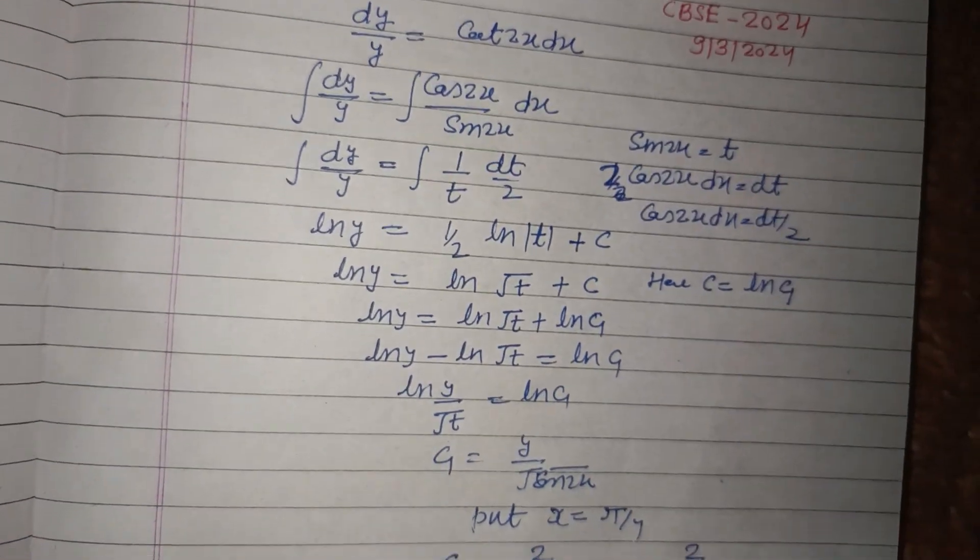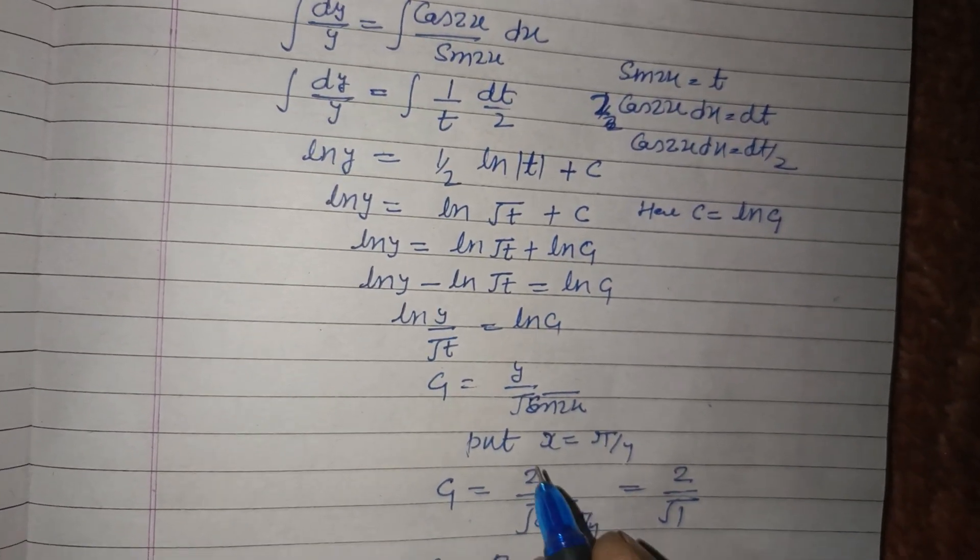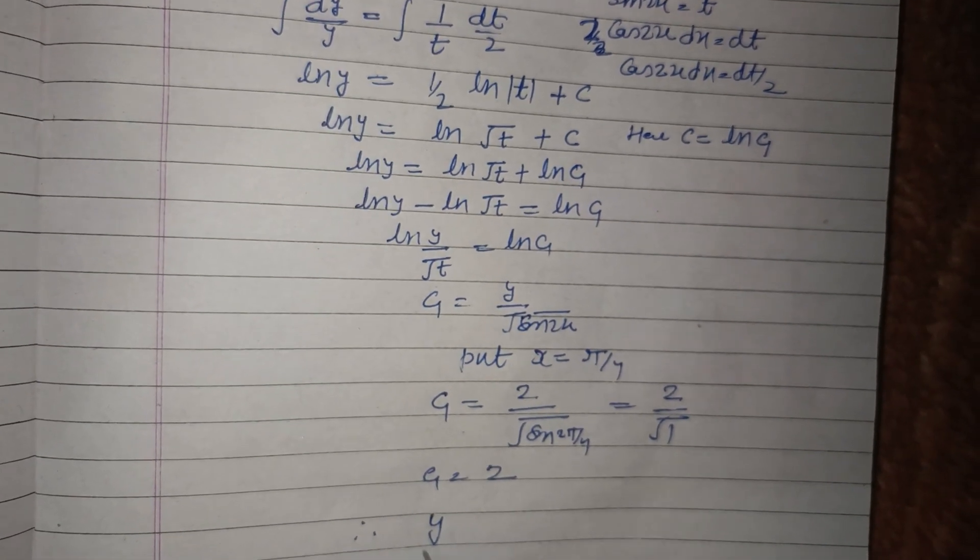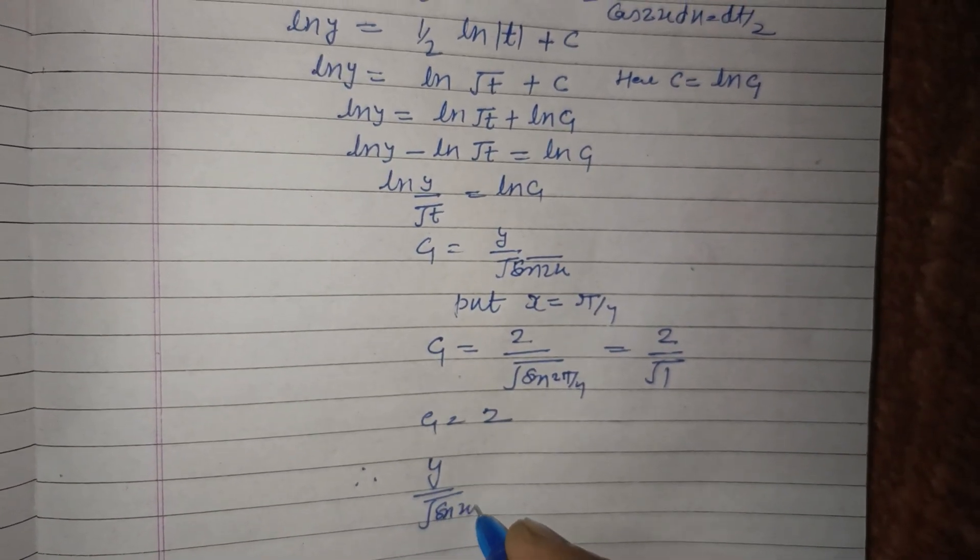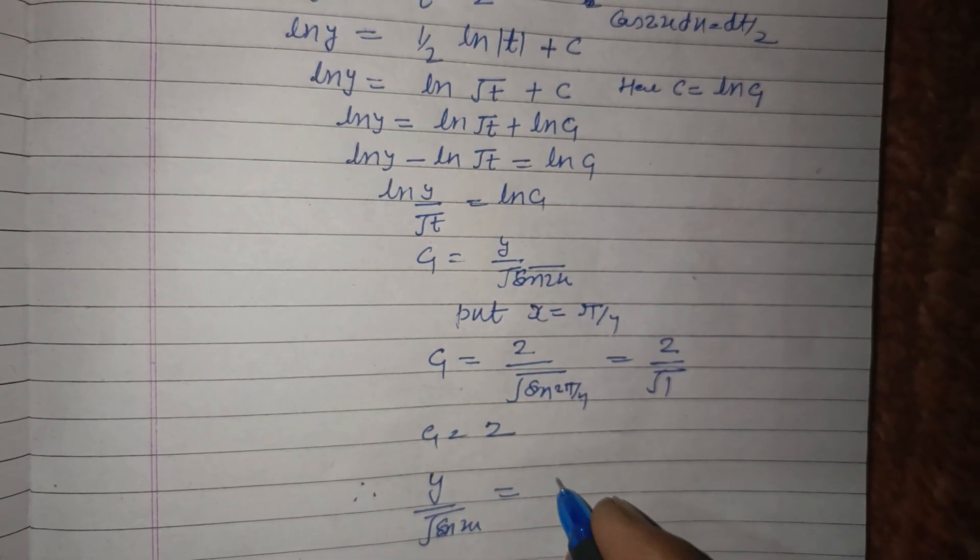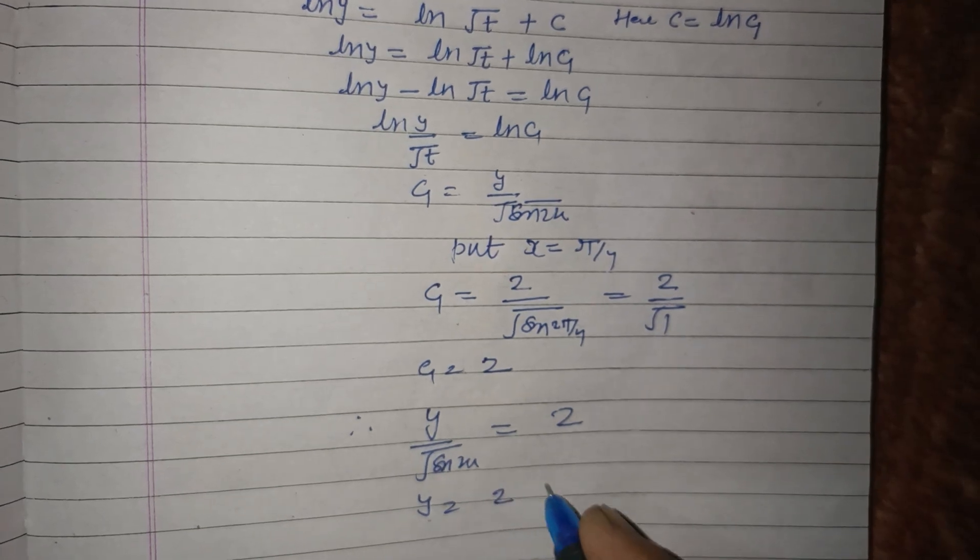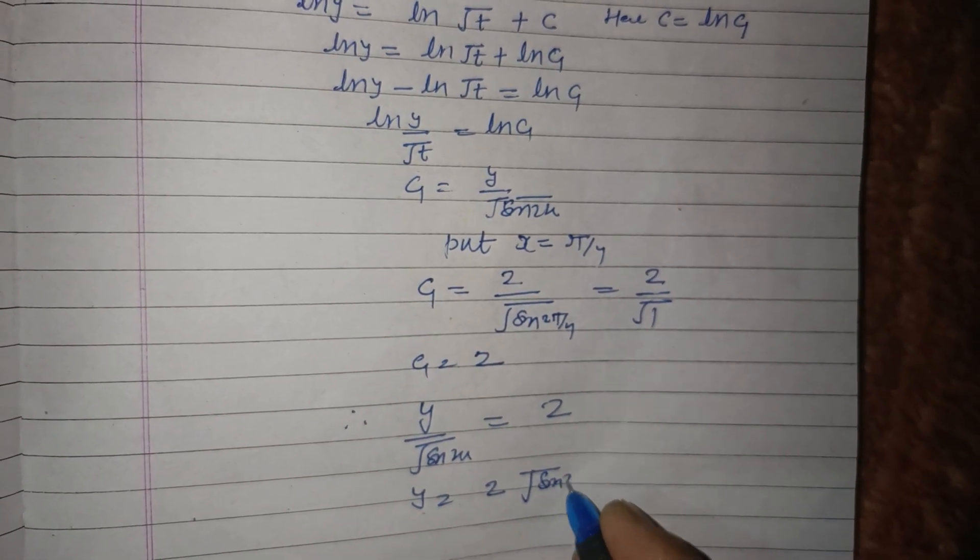c1 is equal to 2. Therefore, the equation is y upon root sin 2x equal to 2, or y equal to 2 root sin 2x.